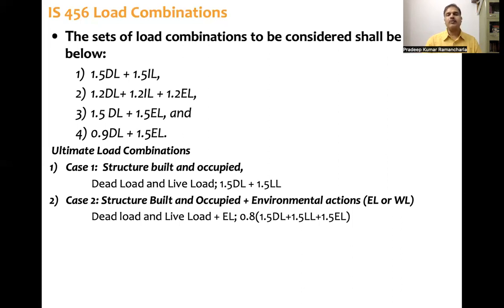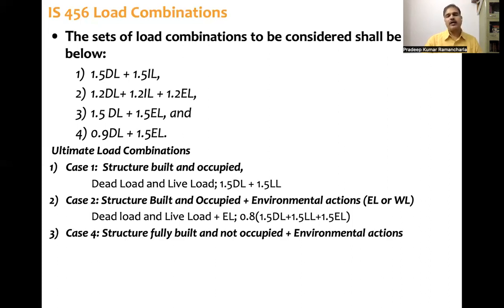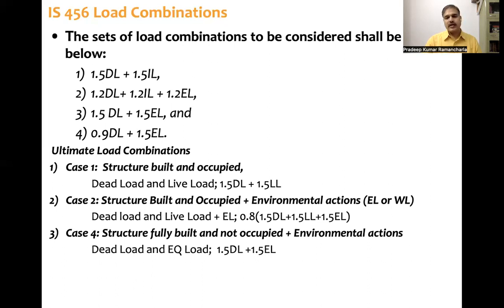The third load combination is: structure is fully built but not occupied, plus earthquake load is acting. Since there is no imposed load, we have full dead load plus earthquake load. So this gives 1.5 times dead load plus 1.5 times earthquake load. Here we are discussing IS 1893, so earthquake load is used, though wind load could replace it in a similar manner.